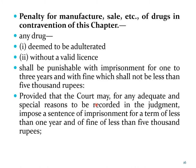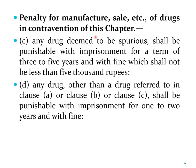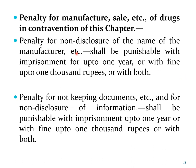Any drug deemed to be spurious shall be punishable with imprisonment for 3 to 5 years and with a fine not less than Rs. 5,000. Any other drug contravention not covered above shall be punishable with imprisonment for 1 to 2 years and with a fine. Penalty for non-disclosure of the name of the manufacturer or any similar offense shall be punishable with imprisonment for up to 1 year or with a fine up to Rs. 1,000 or with both.